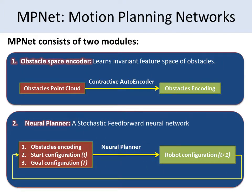The second module is a stochastic feed-forward neural network that takes obstacle encoding from Module 1 together with robot start and goal configurations to produce a next step that would lead the robot closer to its goal. This module is trained through supervised learning by using a set of optimal paths from any classical motion planner.